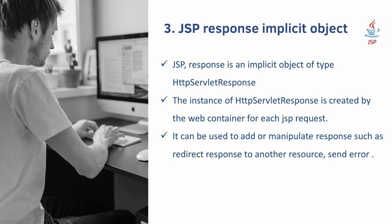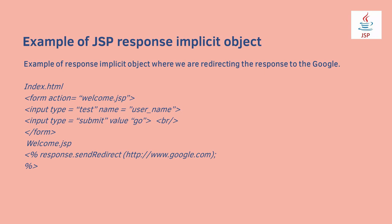The third is the GSP Response implicit object, of type HttpServletResponse. The instance of HttpServletResponse is created by the web container for each GSP request. It can be used to add or manipulate the response, such as redirect the response to another resource, send error, etc. In the example, we create a form index.html for input values, and we use the response implicit object to send the request to Google using the sendRedirect() method.